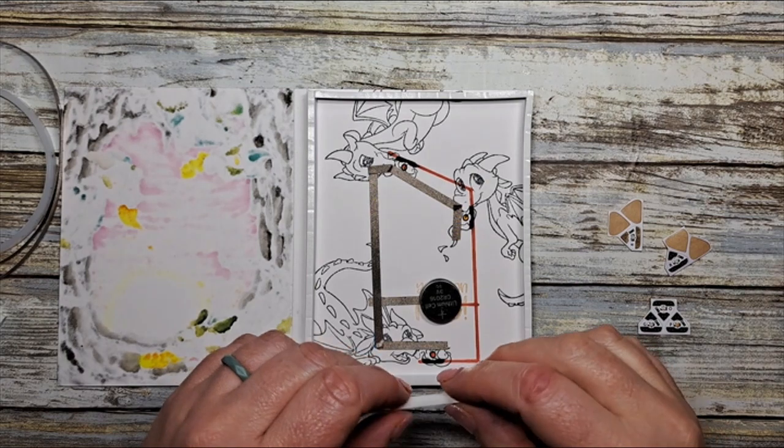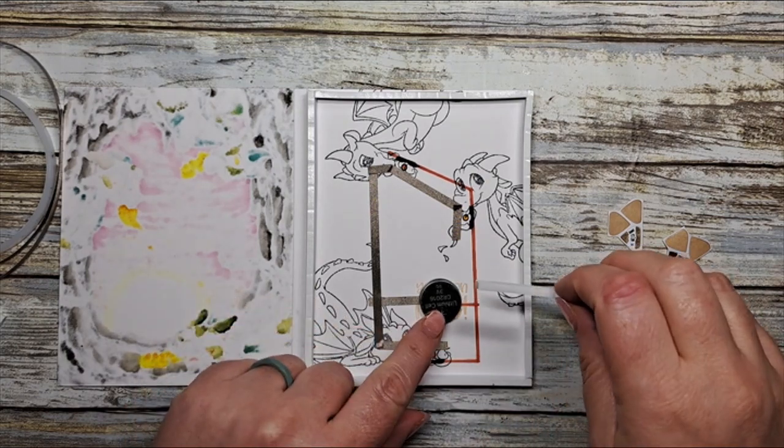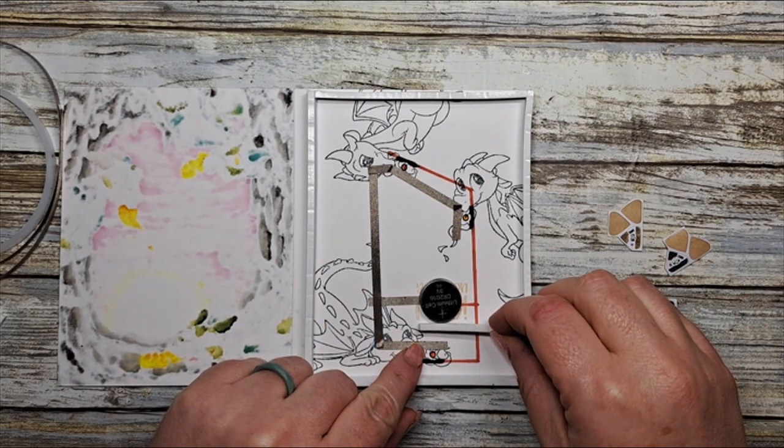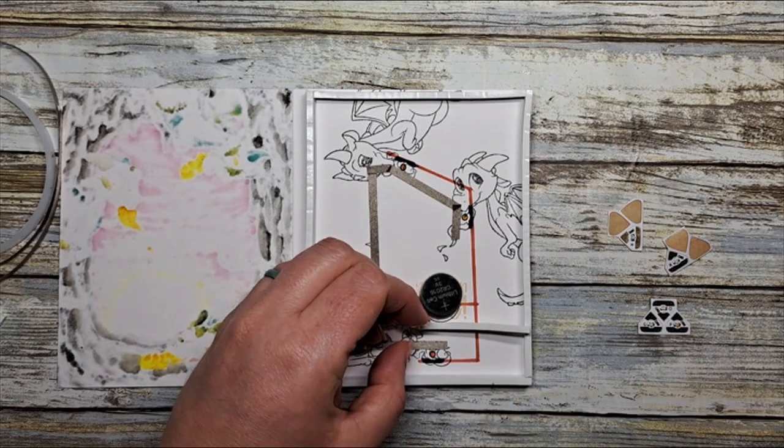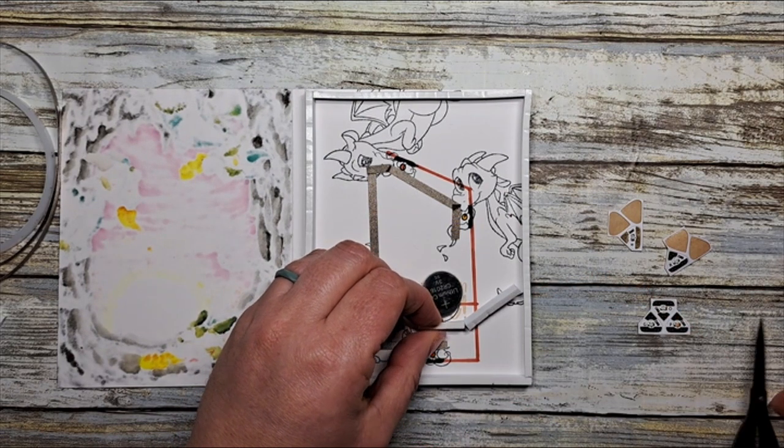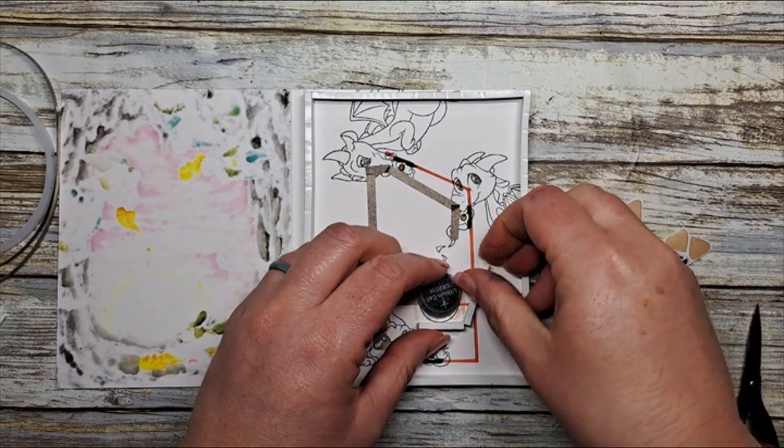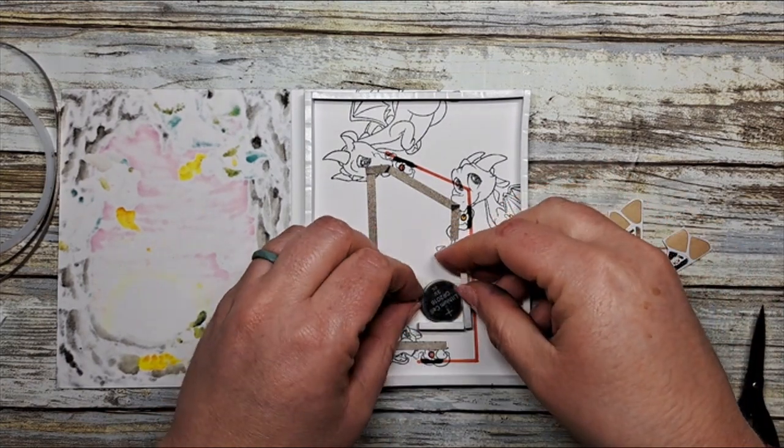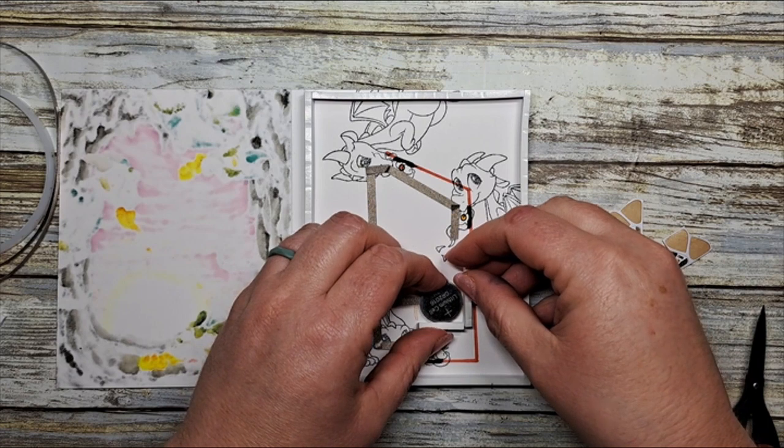Next we're going to create a little housing to hold our lithium batteries. All I'm going to do is create a little box basically to allow our batteries to remain in one spot and they're not going to shift within the confines of our card.